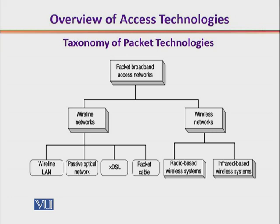You can see that the taxonomy has been defined on the basis of wireline networks — the networks which use transmission media — and the wireless networks. Within the wireline network, we have different technologies. For instance, local area networks, passive optical networks which use fiber optic cable, the DSL modem family which uses UTP (unshielded twisted pair), and packet cable networks that use coaxial cable.